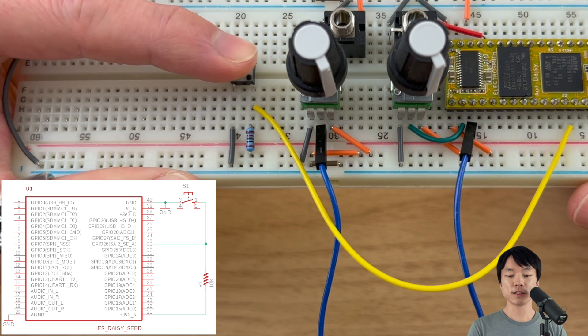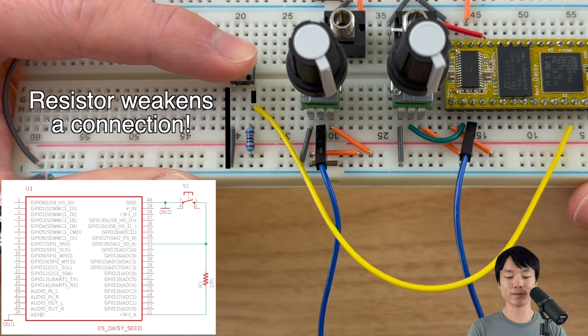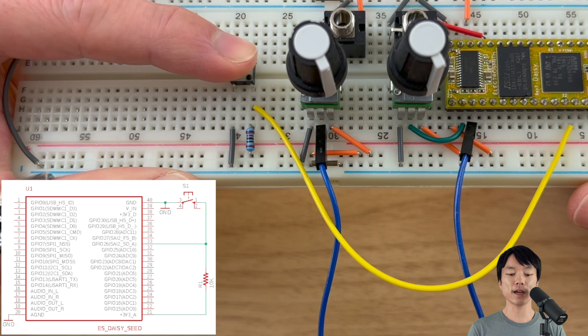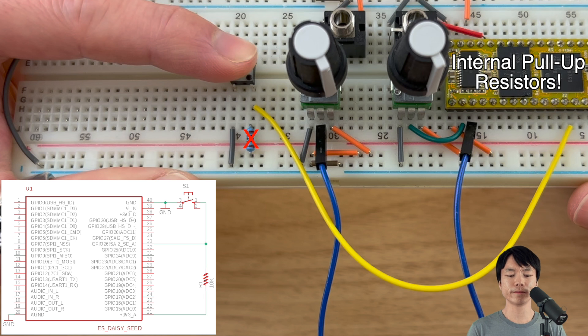Once the button is pressed, the circuit from the DAISY's pin directly to ground will be complete, which will be a stronger connection than to the positive rail with the resistor. So the DAISY's pin will see that signal as low or off. That resistor is known as a pull-up resistor. Luckily for us, the DAISY Seed has an internal pull-up resistor that we can use, which makes the external resistor not required. We'll tell the DAISY to use the internal pull-up resistor via code shortly.